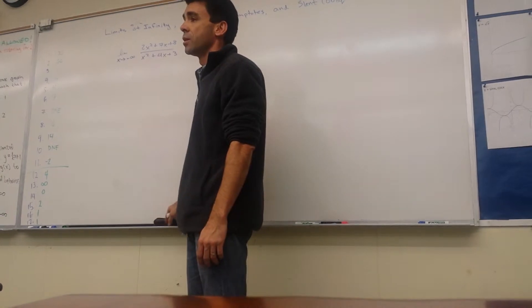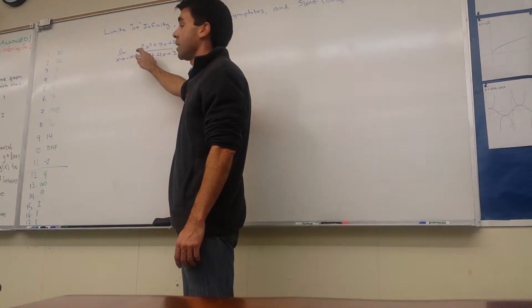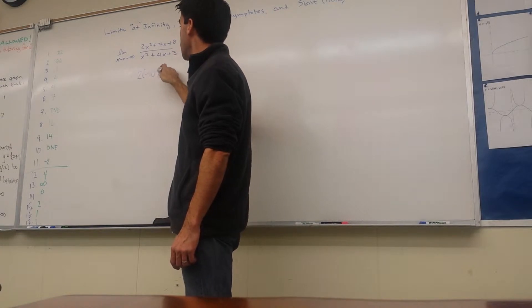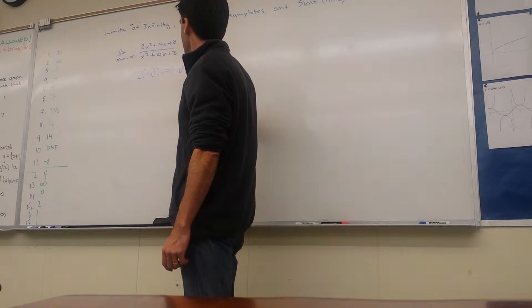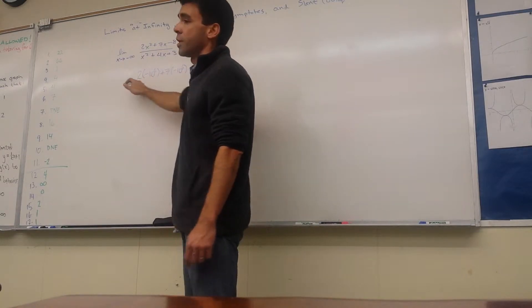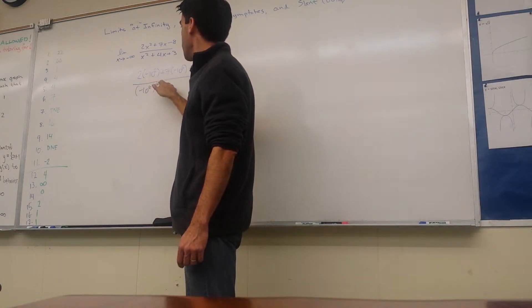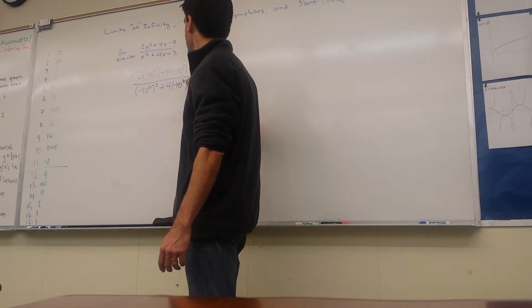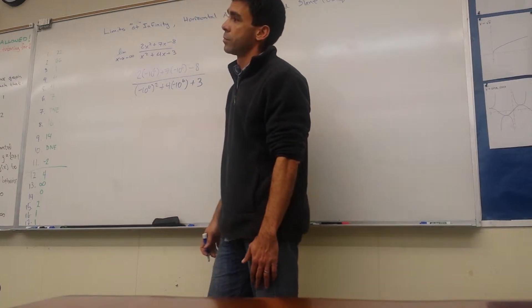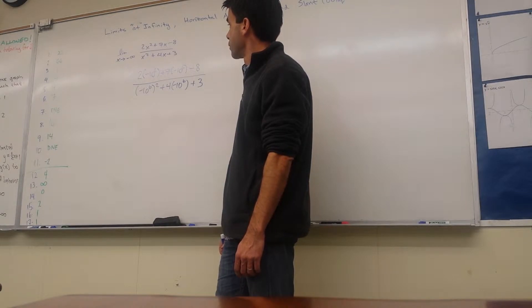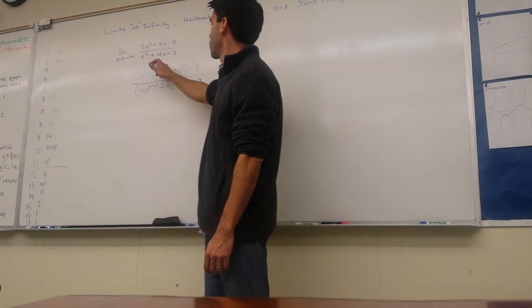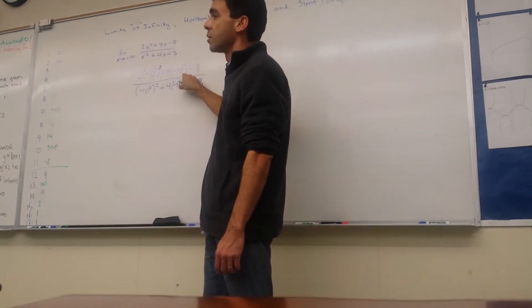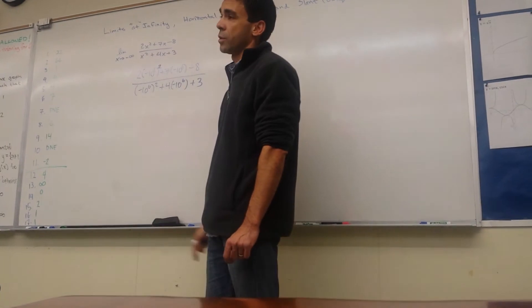I am just going to ask: what would happen if I plugged in extremely negative numbers? What would happen if you plugged in negative a million — or negative 10 to the 6th? I would have 2 times negative 1 million squared plus 7 times negative 1 million minus 8, and at the bottom I have negative 1 million squared plus 4 times negative 1 million plus 3.